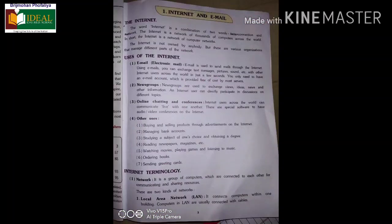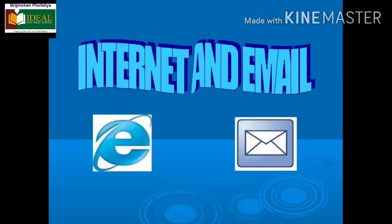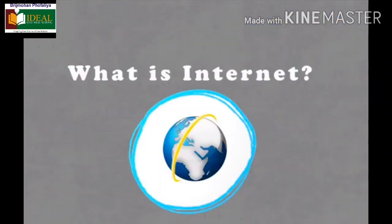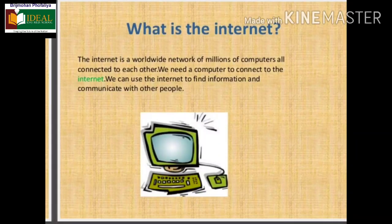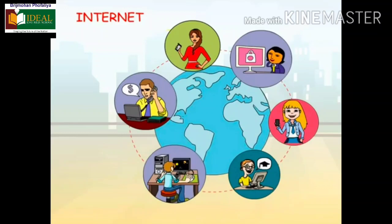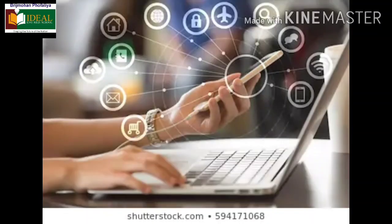The word Internet is a combination of two words, that is interconnection and network. The Internet is a network of thousands of computers across the world. In short, the Internet is the network of computer networking. The Internet is not owned by anyone, but there are various organizations that manage the different parts of the network.